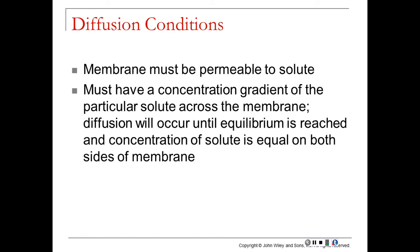For diffusion conditions that have to be present: the membrane has to be permeable to the solute — it has to let the solute cross. There has to be a concentration gradient to drive the net movement of those solutes across the membrane. Diffusion will occur until equilibrium is reached and the solute concentration is equal on both sides of the membrane.